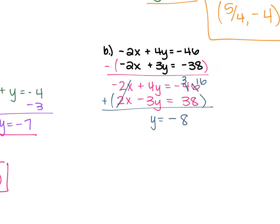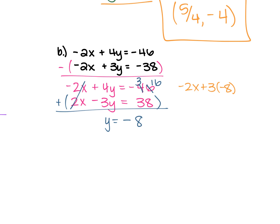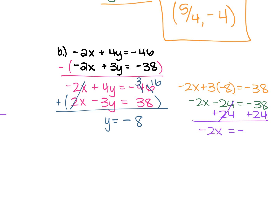Take y equals negative 8 and plug it into one of the original equations. Using the bottom because it has smaller numbers: negative 2x plus 3 times negative 8 equals negative 38. That's negative 2x minus 24 equals negative 38. Add 24 to both sides to get negative 2x equals negative 14. Divide each side by negative 2 and x equals 7. So y is negative 8 and x is 7 — the ordered pair is (7, negative 8).